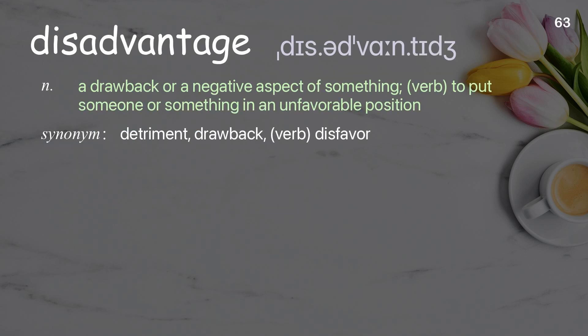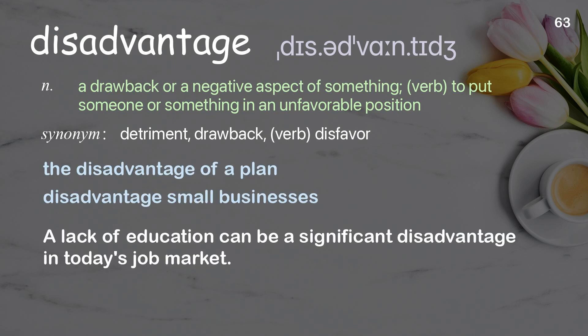Disadvantage: a drawback or a negative aspect of something. Verb: to put someone or something in an unfavorable position. Examples: the disadvantage of a plan, disadvantage small businesses. A lack of education can be a significant disadvantage in today's job market.